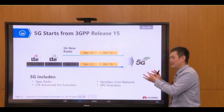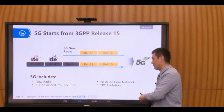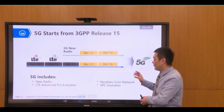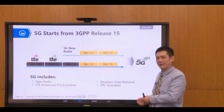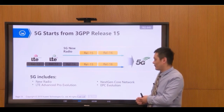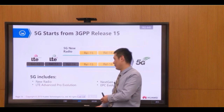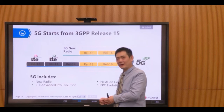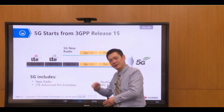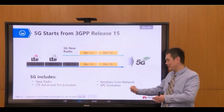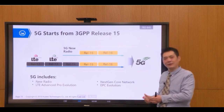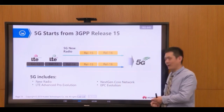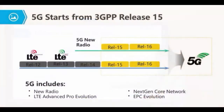For the technical specification, 5G can be defined by the radio network and the core network. The radio network is called New Radio. For LTE, the equivalent was called E-UTRAN. For 5G, we call it New Radio — that is the radio network part. For the core network, LTE uses the EPC, and for 5G we call it the Next Generation Core, or NGC.